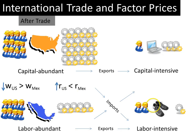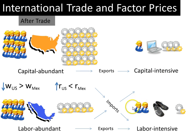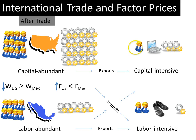What's going to happen in Mexico? In Mexico, the opposite is happening: the shoe industry is expanding while the laptop industry is contracting. As the shoe industry expands, the demand for workers is going to go up by quite a bit, because shoes require a lot of labor to produce. On the other hand, the shrinking laptop industry in Mexico is going to release only a little bit of labor. So the demand for labor is going up quite a bit, while the supply of labor is going up only a little bit. Therefore, the wages of workers in Mexico will be going up.